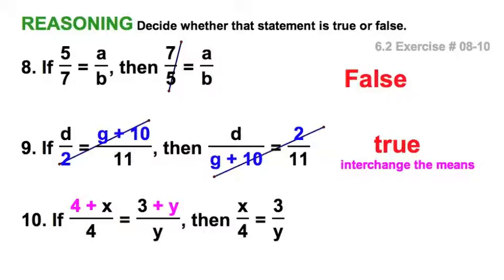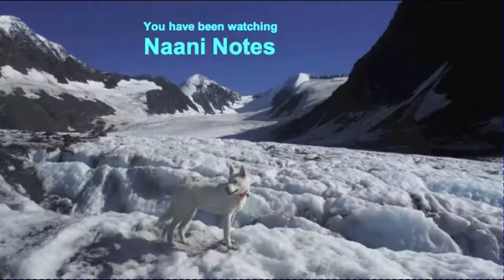And finally, number 10: if 4 plus x is to 4 as 3 plus y is to y, then x is to 4 as 3 is to y. Well, the same thing, just actually a little reverse here. Instead of adding 4/4 to one side, y over y, or like I like to say, 1 to both sides of the equation, we're subtracting both. We're subtracting 1 from both sides of the equation, and that would be this property, adding denominator of each ratio to its numerator. And I guess we're adding a negative. So worked out pretty good. And I would say: false, true, true.